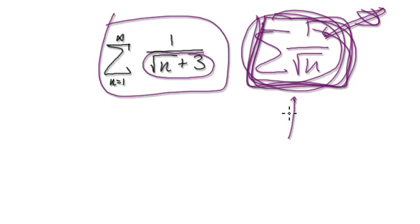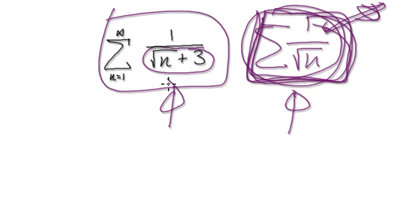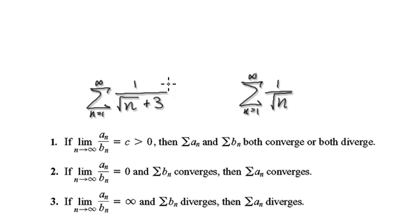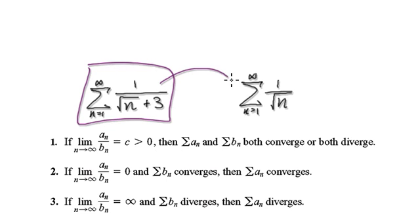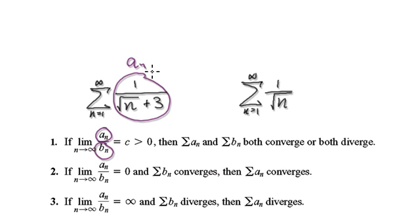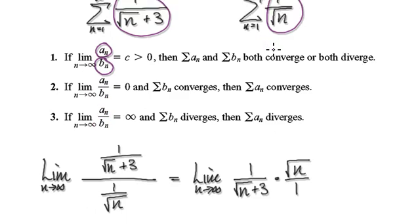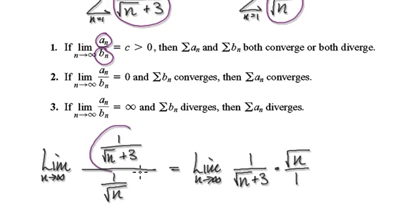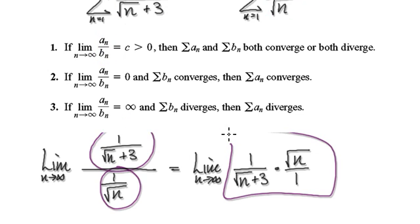So we should be comparing our series with b_n equals 1 over square root of n. Let the given series be a_n, and let b_n equal 1 over square root of n. If we compute a_n divided by b_n, that will give us this expression.